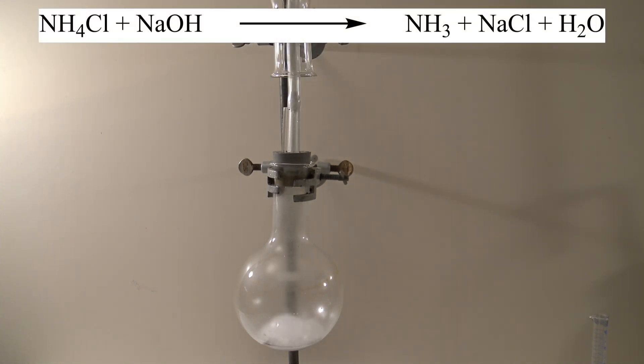The ammonium chloride reacts with the sodium hydroxide to form ammonia, sodium chloride and water. The gas is lighter than air and is collected in the upper flask.